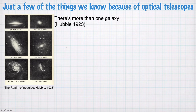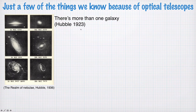Some things we know because of optical telescopes. These are images from a book written by Edwin Hubble in 1936 — images of galaxies. Until he took these pictures in 1923, no one knew that the universe was bigger than the Milky Way. Really, the birth of cosmology and the idea that we have a universe filled with galaxies is fairly recent — certainly within the last hundred years.